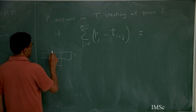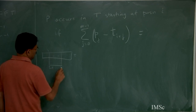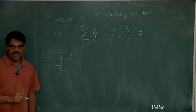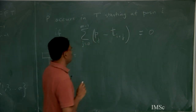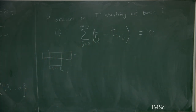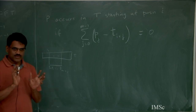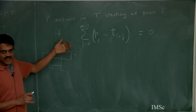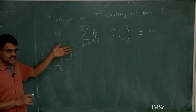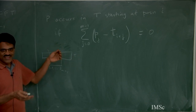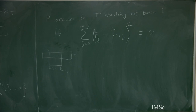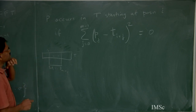The pattern P occurs in T starting at position i if and only if the following sum equals zero: the sum over j from 0 to m minus 1 of (p_j minus t_{i+j}) squared equals zero. If the pattern occurs starting at position i, then p_j minus t_{i+j} is 0 for every j and the sum is 0. I also want the converse to be true. By squaring each term, since these are all positive numbers, they can only add up to 0 if every term is 0. So it is if and only if.